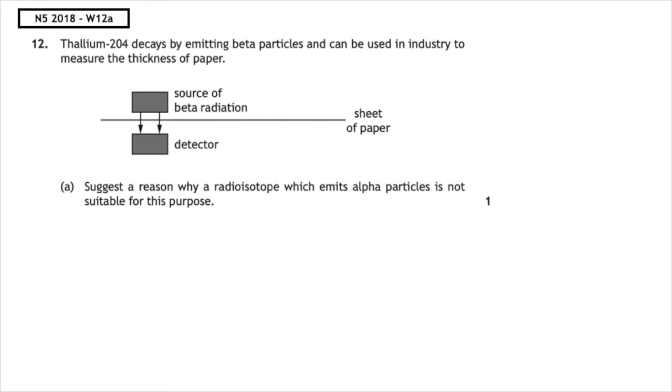This past paper question is from the National 5, 2018, written 12a. Thallium-204 decays by emitting a beta particle and can be used in industry to measure the thickness of paper. It suggests the reason why a radioisotope which emits alpha particles is not suitable for this purpose.